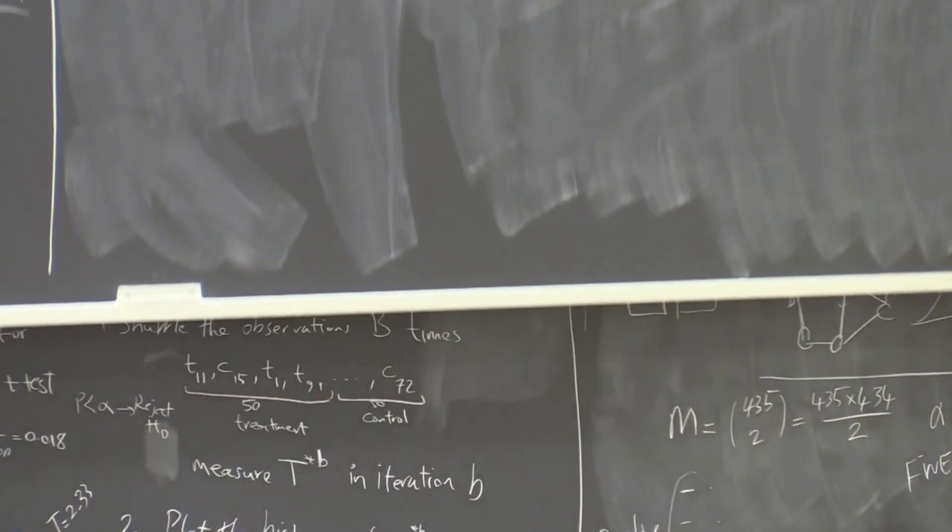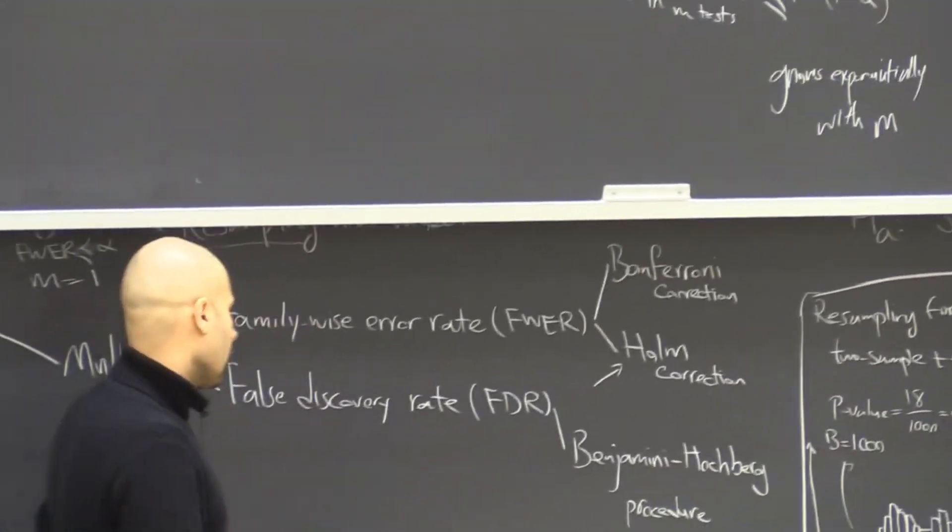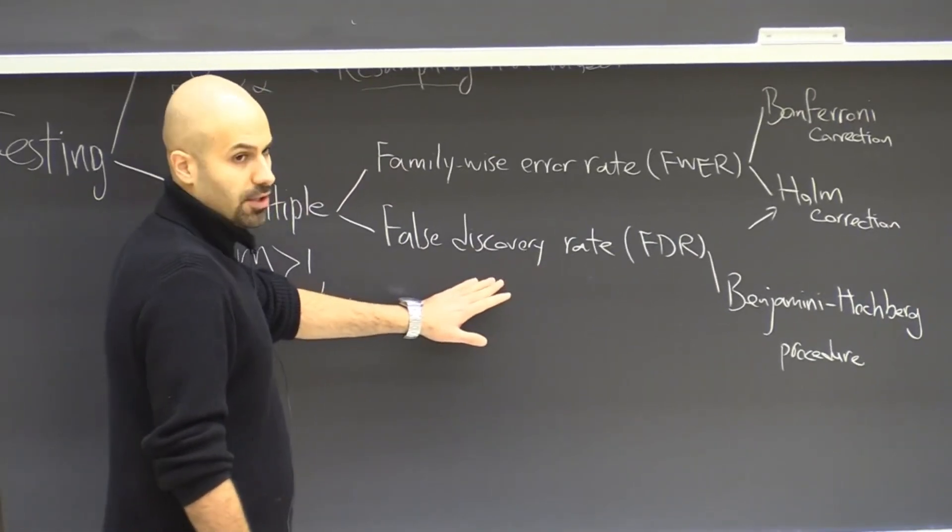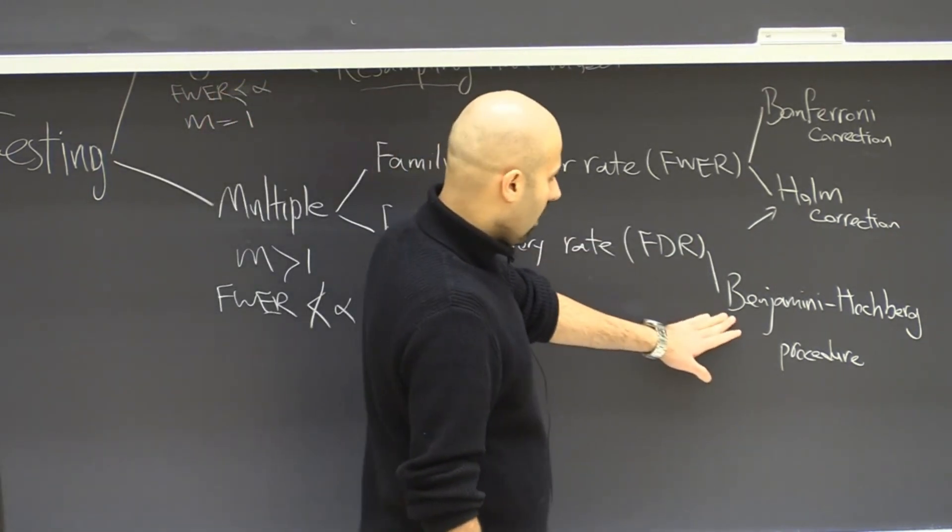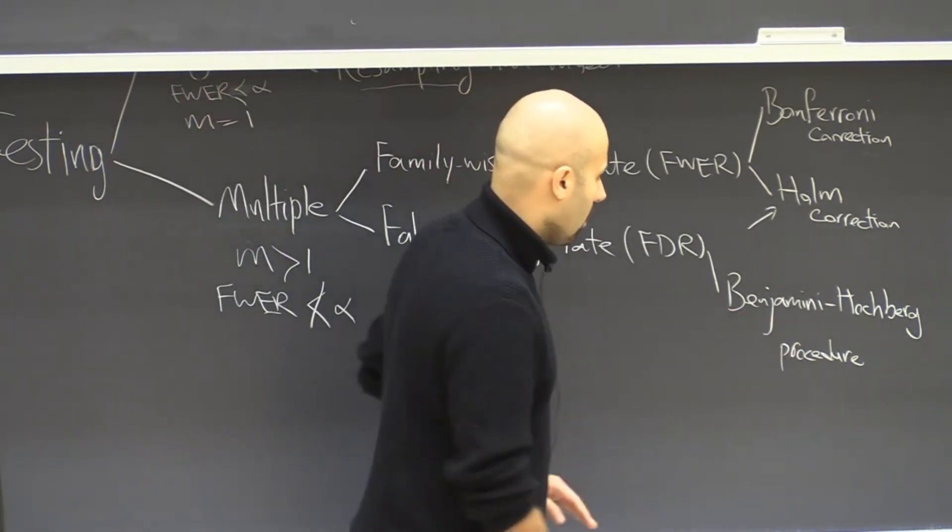We're now controlling the false discovery rate, or FDR, and here we want a different guarantee. This is not about family-wise error rate anymore, and the procedure we have for it is called Benjamini-Hochberg procedure.